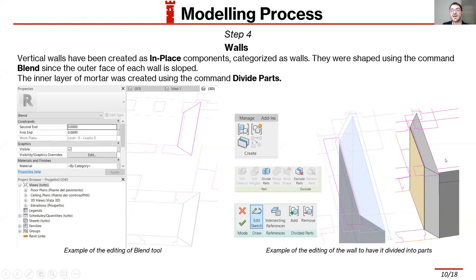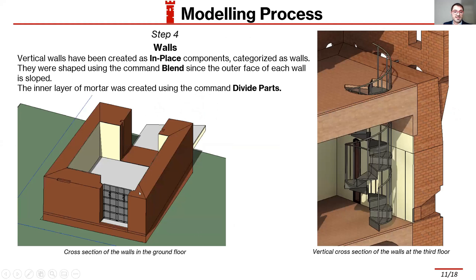We also had different materials to handle: the core was made of masonry, but the inner part was made of plaster. To reproduce this in the walls, we used the divide parts feature. As you can see, these two cross-section examples — horizontal and vertical — show the thickness of the wall changing with regard to height.